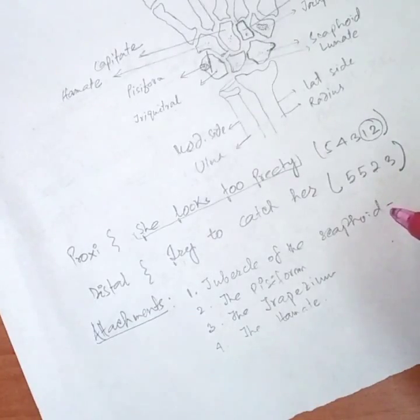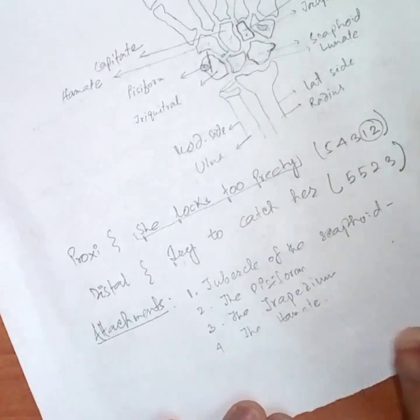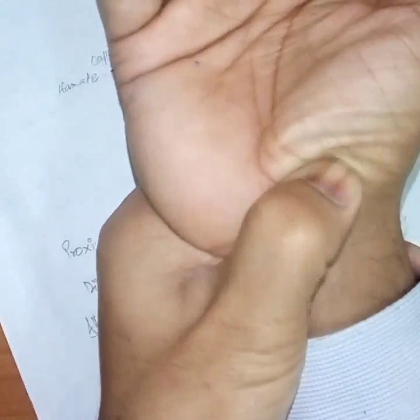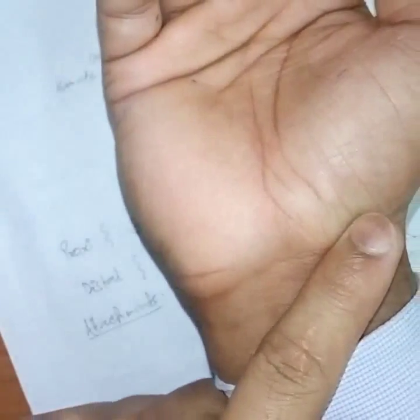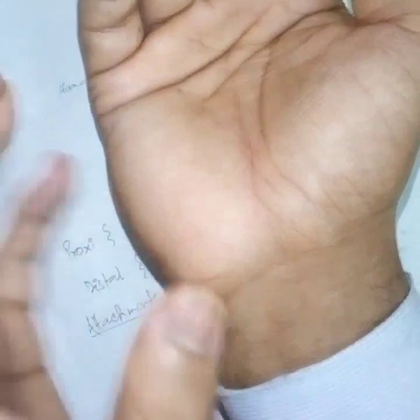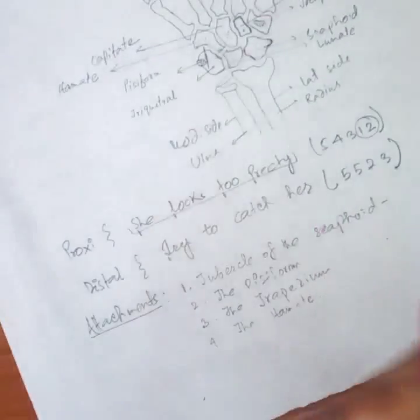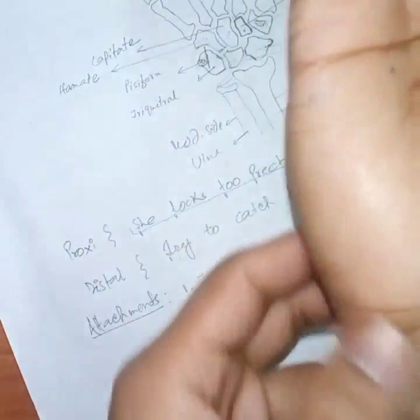On the tubercle of the scaphoid, two structures are attached: the flexor retinaculum — also called the transverse carpal ligament — and a few fibers of the abductor pollicis brevis. On the pisiform bone, the flexor carpi ulnaris is inserted, along with the flexor retinaculum.